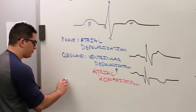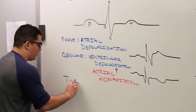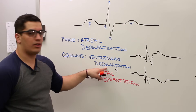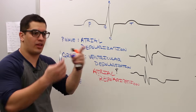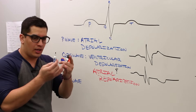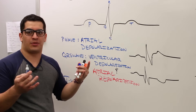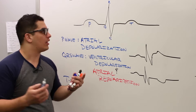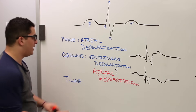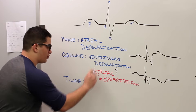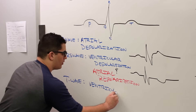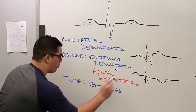The T wave signifies the ventricles repolarizing. After they've contracted, they have to go into the refractory period so that oxygen can be delivered to the tissues — that's when the coronary circulation is filling. Once that happens, the ventricles repolarize and get ready to be excited again. So we say the T wave represents ventricular repolarization.